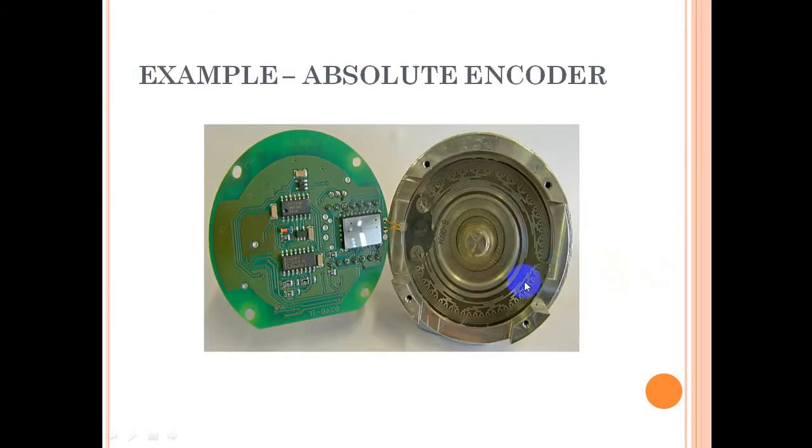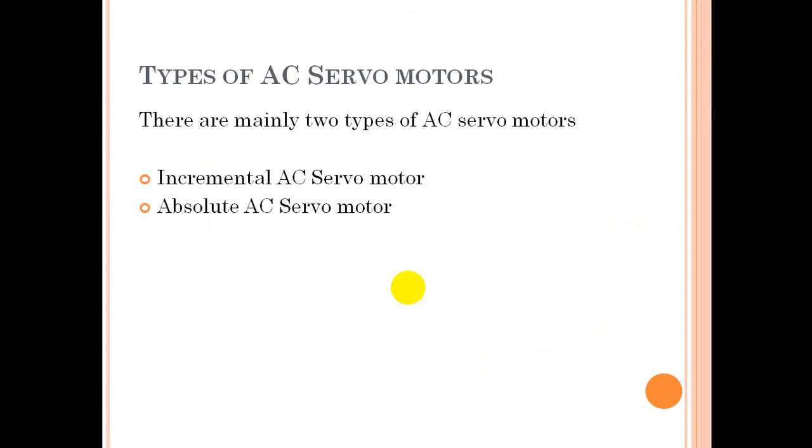Here's the encoder system with an electronic part and reflector. You can see the LEDs used to transmit light and receivers to receive the reflected light. You can see the patterns of this disc. Depending on the encoders, motors and servo motors are divided into two types: incremental and absolute.